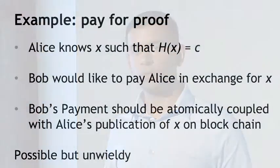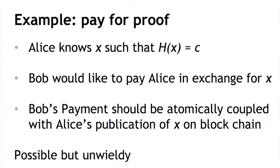Now let's look at another example that gets even more complex: paying for a proof. Let's say there's a hash function h, and Alice claims to know some input x such that hashing x results in some constant c that's known to everybody — in other words, she knows the hash pre-image of some value.